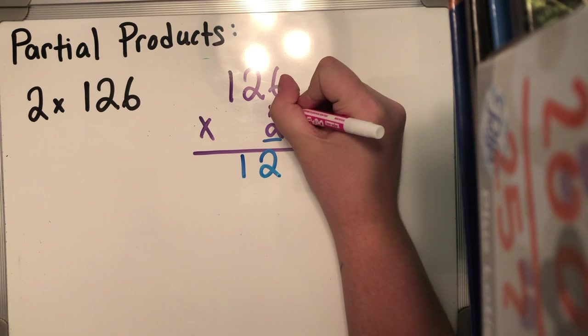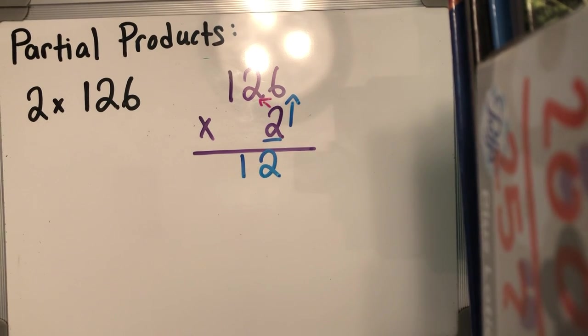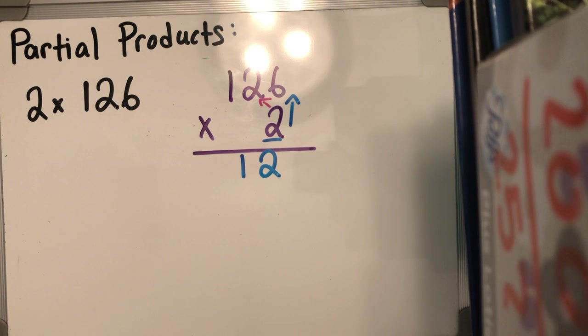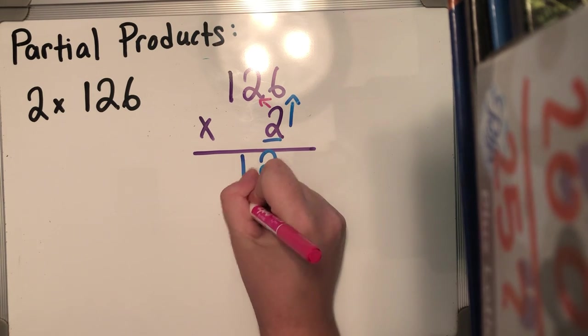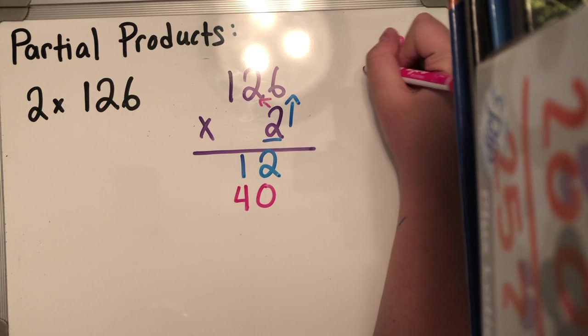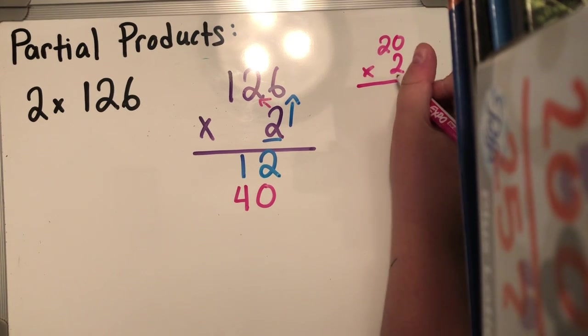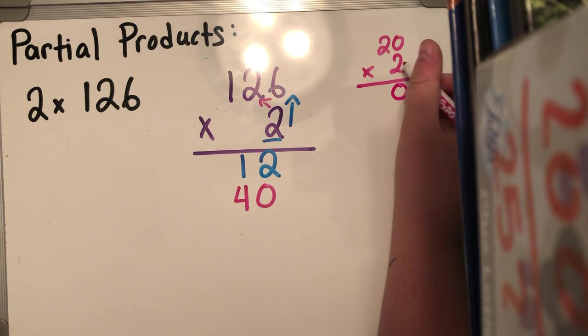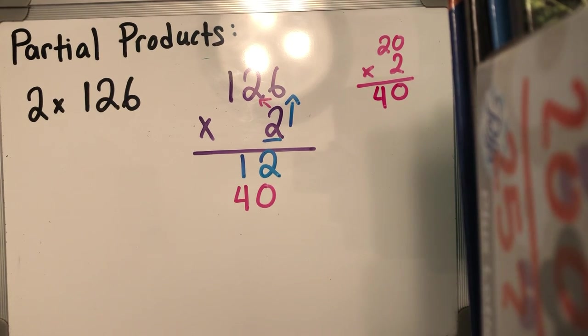Now I'm gonna go across to the tens and it's no longer two times two, it's two times 20. Two times 20 is 40. And if I need to do so over here and do some practice to make sure that I'm writing down the correct thing, then yes, two times zero is zero. Go across, two times two is really 40.